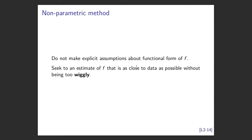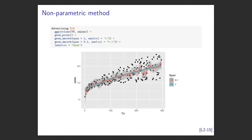A non-parametric method doesn't make assumptions about functional form - it's pieced together. We're trying to find an estimate of f that's as close to the data as possible without being too wiggly. Here's a classic example: I take the advertising data, plot TV versus sales, add points, then use the default geom_smooth. When you get that wiggly line, it's fitting a LOESS. LOESS takes each little bit, fits a local linear model, then stitches them together - fitting the data piecewise without assuming an overall model.